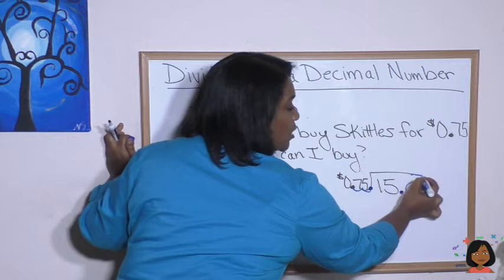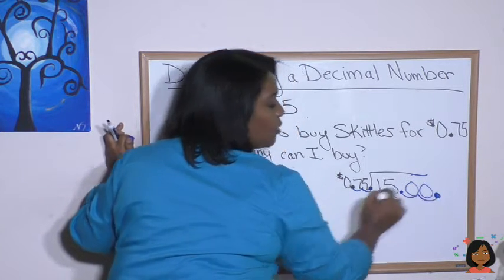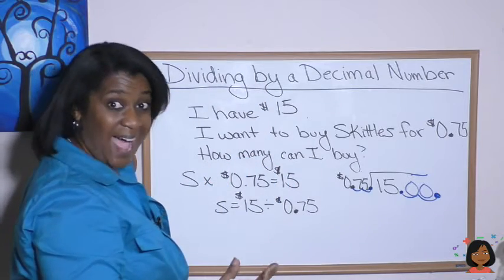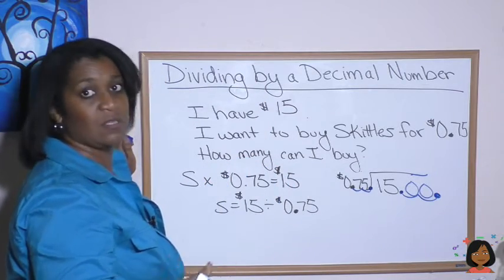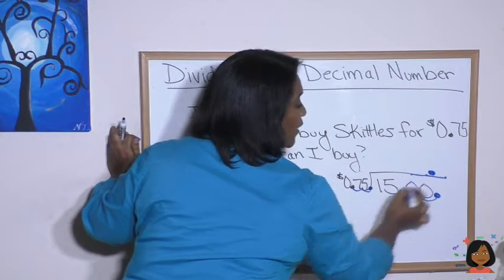So let's add two zeros. And now move it one, two. So our new spark for our decimal is there. And now let's treat it like a normal division problem. We're going to move that decimal up top so we don't forget about it. Okay.